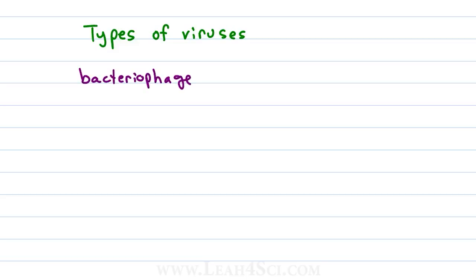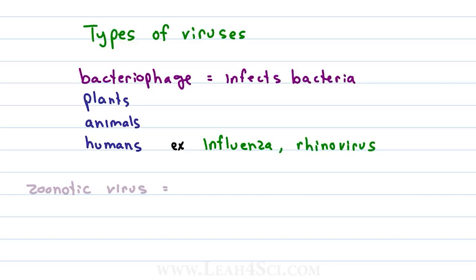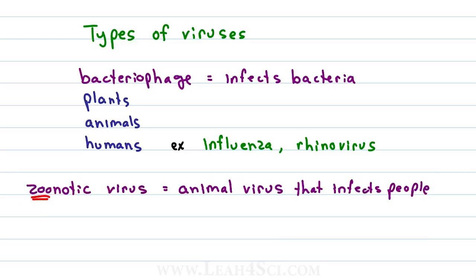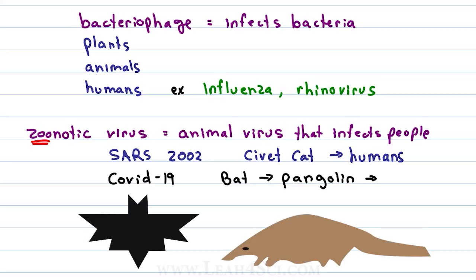There are many different types of viruses specific to the type of organisms they can infect. Bacteriophage is a virus that specifically infects bacteria. There are also specific viruses that infect plants, animals, and humans. Some common viruses include influenza — the flu — and rhinovirus, which causes the common cold. The zoonotic virus, coming from the word 'zoo,' refers to animal viruses that can infect people. Coronaviruses are zoonotic viruses: SARS coronavirus from 2002 was transmitted from a civet cat to humans, and COVID-19 is believed to have originated in bats, transmitted to the pangolin, and from the pangolin to humans.